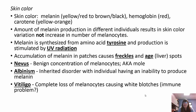Skin color comes from melanin, which has a yellow, red to brown or blackish hue; hemoglobin gives a red hue; and carotene gives a yellow to orange hue. The amount of melanin production — not the number of melanocytes — results in skin color. It's the activity of the melanocytes that gives us our skin color. Melanin is synthesized from tyrosine, an amino acid, and is stimulated by UV radiation. Accumulation of melanin in patches can cause freckles or liver spots with age.